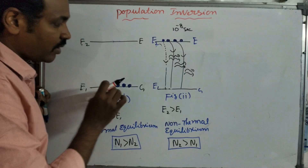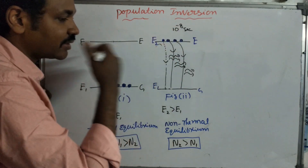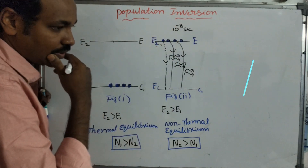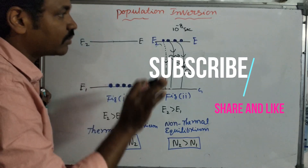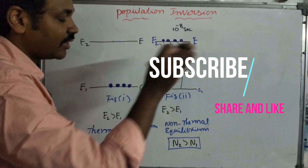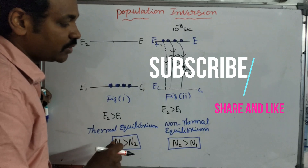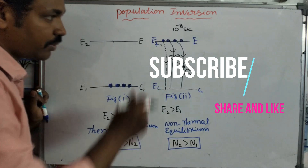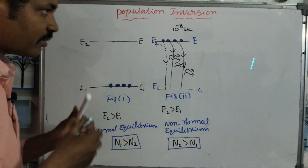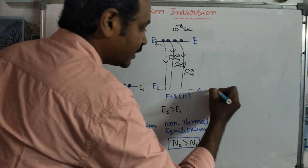If we compare the two energy levels, we have population inversion and we acquire stimulated emission. Atoms stay at the excited state for about 10 to the power of minus 8 seconds. Then we compare the three-level energy system.